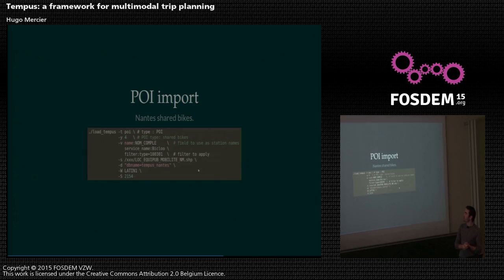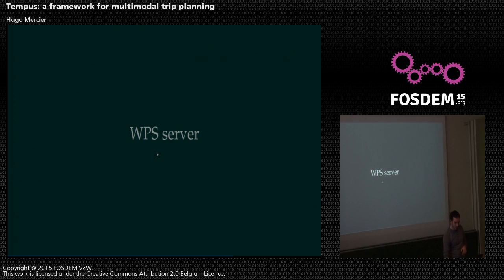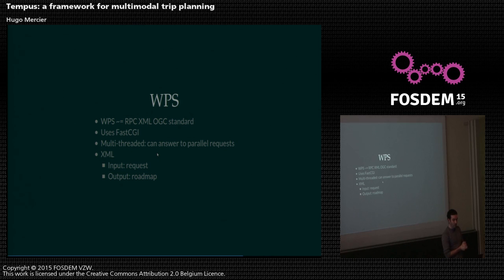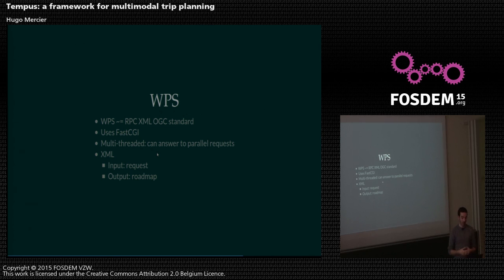For POI imports from a shapefile, you can use a small filter predicate — for example, extract only features where the column 'type' equals a specific code. The WPS server: WPS stands for Web Processing Standard from the OGC. It's basically an XML-based RPC. It uses FastCGI and is multi-threaded so requests can be processed in parallel. Inputs are user requests and outputs are roadmaps, all in XML.